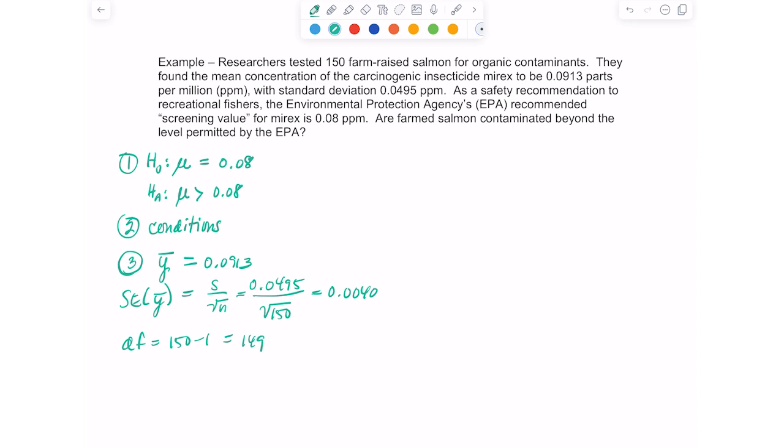I know that my degrees of freedom we calculated before is N minus one. So it's 149. So I'm looking here for my T test statistic, and that's going to be my X bar, which is Y bar, 0.0913 minus mu, which is 0.08. And then divide it by the standard error we found, which was 0.0040. And when you do this, you get 2.83.